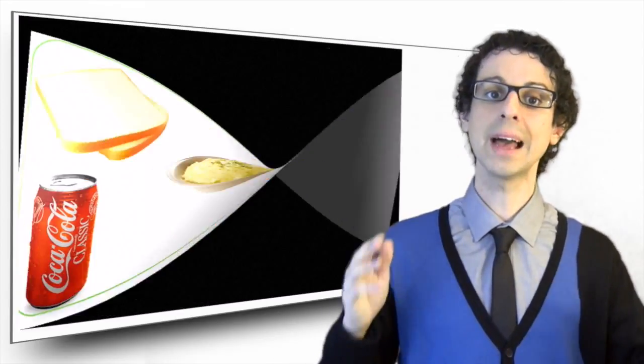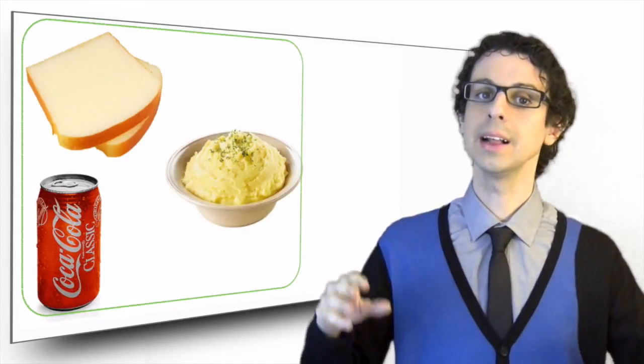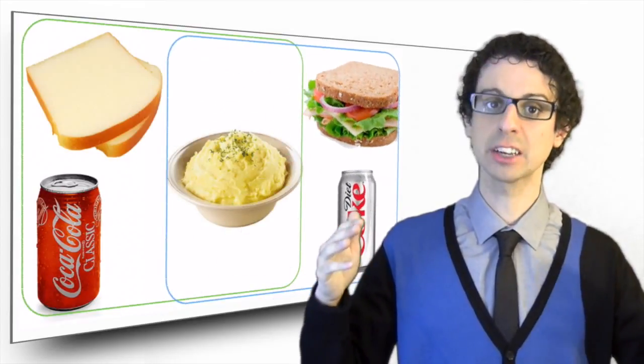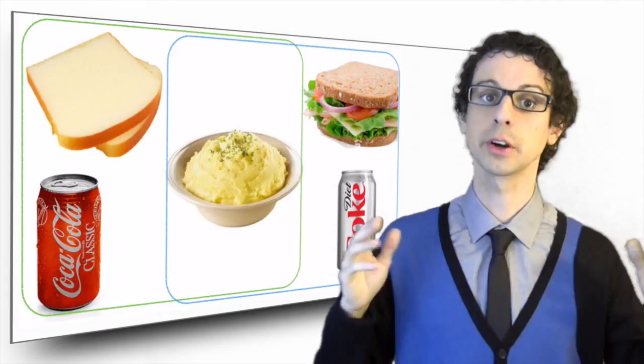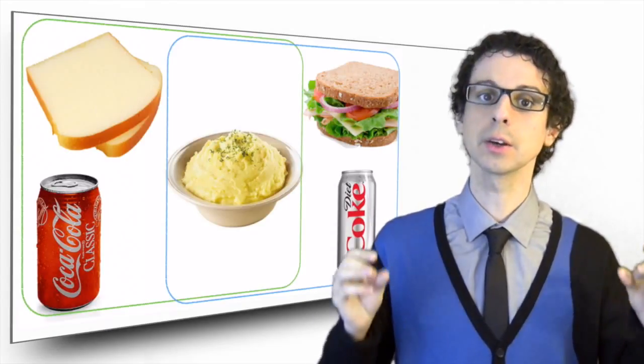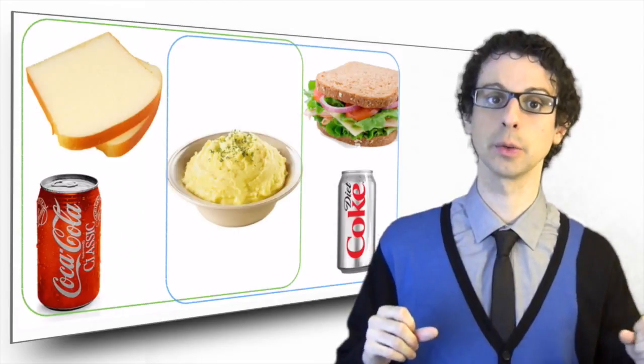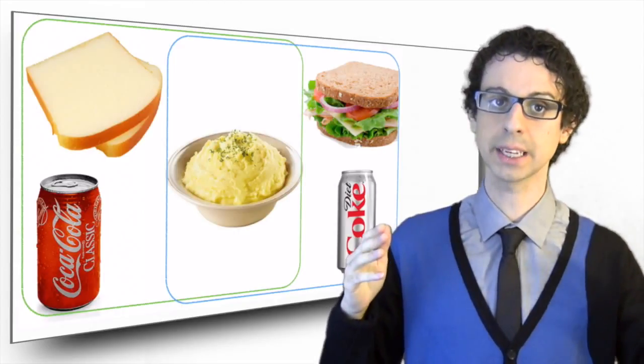Let's suppose we eat our mashed potatoes together with two slices of white bread and a can of Coke. Or let's imagine eating the same mashed potato with just one slice of whole wheat bread with turkey and salad and a can of diet Coke. What do you think would become of the glycemic load of the whole meal?